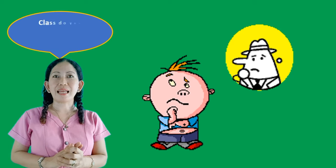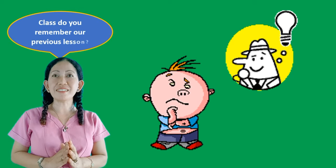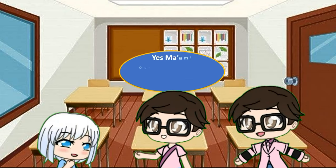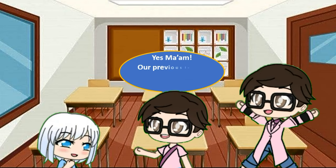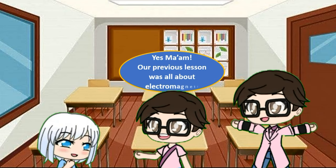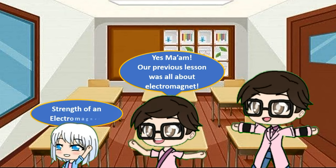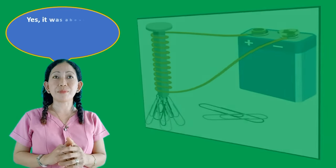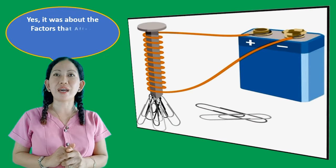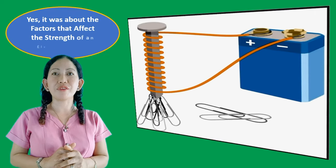Class, do you remember our previous lesson? Our previous lesson was all about the electromagnet — specifically the factors that affect the strength of an electromagnet.